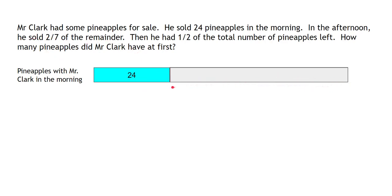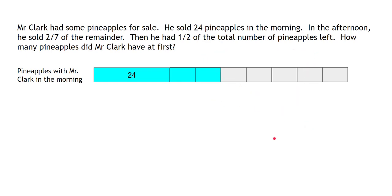If we divide this remainder portion into seven parts, out of those seven parts he sold two parts. So let's divide this into seven equal parts: one, two, three, four, five, six, seven — and two out of seven were sold in the afternoon. After selling this, he had half of the total number of pineapples left. What he has left is half of the total, represented by five units, and since they are equal units, the other half should also equal five units.